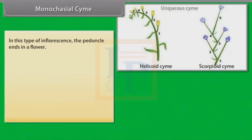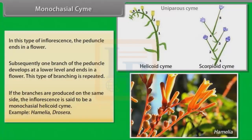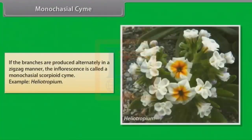In Monocasial Chyme, the peduncle ends in a flower. Subsequently one branch of the peduncle develops at a lower level and ends in a flower; this type of branching is repeated. If the branches are produced on the same side the inflorescence is said to be a monocasial helicoid chyme. Example: Hamelia, Drosera. If the branches are produced alternately in a zigzag manner the inflorescence is called a monocasial scorpioid chyme. Example: Heliotropium.